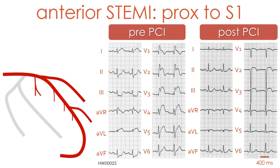This electrocardiogram shows another very important sign of proximal LAD occlusion: the development of peri-infarction right bundle branch block as a sign of occlusion before the takeoff level of the first septal branch.